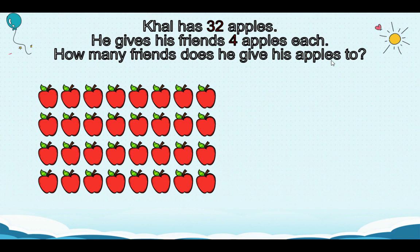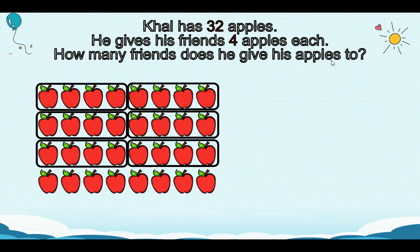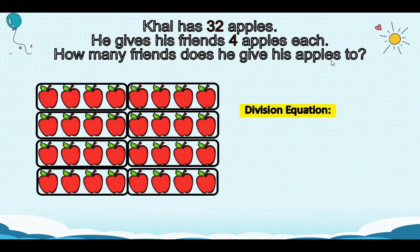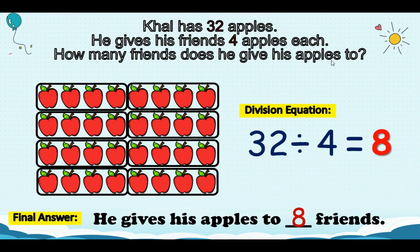Carl has 32 apples. He gives his friends 4 apples each. How many friends does he give his apples to? Let's count 4 apples and group them — another 4, another 4, another 4, another 4, another 4, another 4, and 4 to box. Here's the division equation: 32 divided by 4 equals how many groups of 4 apples? There are 8 groups of 4 apples. So, he gives his apples to 8 friends.